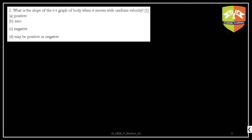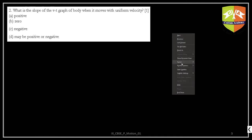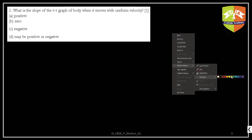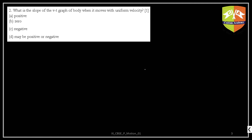The next question is: what is the slope of the v-t graph of a body when it moves with uniform velocity?